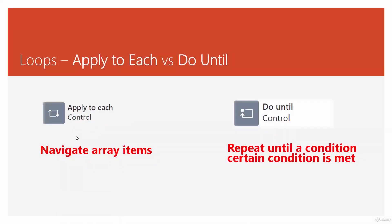We are back to loops. You're already familiar with apply to each, but we'll dig a little bit more into it, and then we will get into something a bit more interesting called do until. Apply to each is typically used to navigate through all the items in a collection — all the records returned from, for example, a SharePoint list, all the files received from a library, all the items in an array.